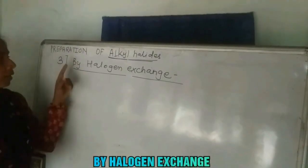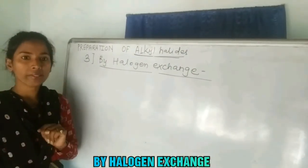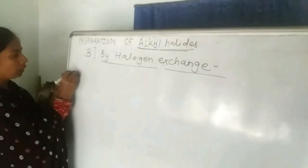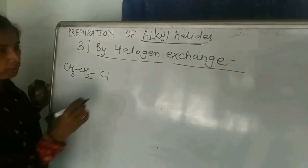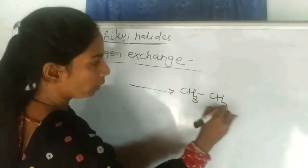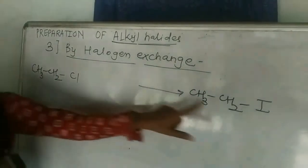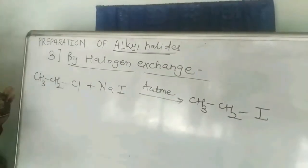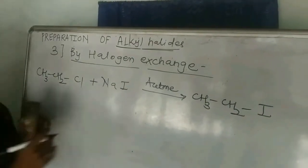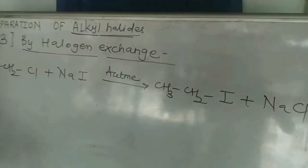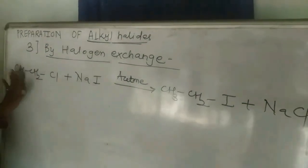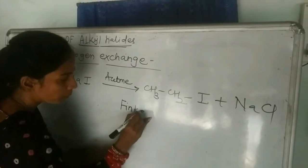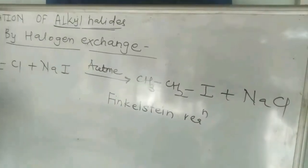The third method for the preparation of alkyl halides is by halogen exchange. In this method, alkyl iodides or alkyl fluorides can be prepared from other alkyl halides. To prepare alkyl iodide, start with ethyl chloride and convert it to ethyl iodide by replacing chlorine with iodine. The reagent used is sodium iodide (NaI) in dry acetone. Chlorine is removed as NaCl precipitate, which is easily separated. This named reaction is called the Finkelstein reaction.